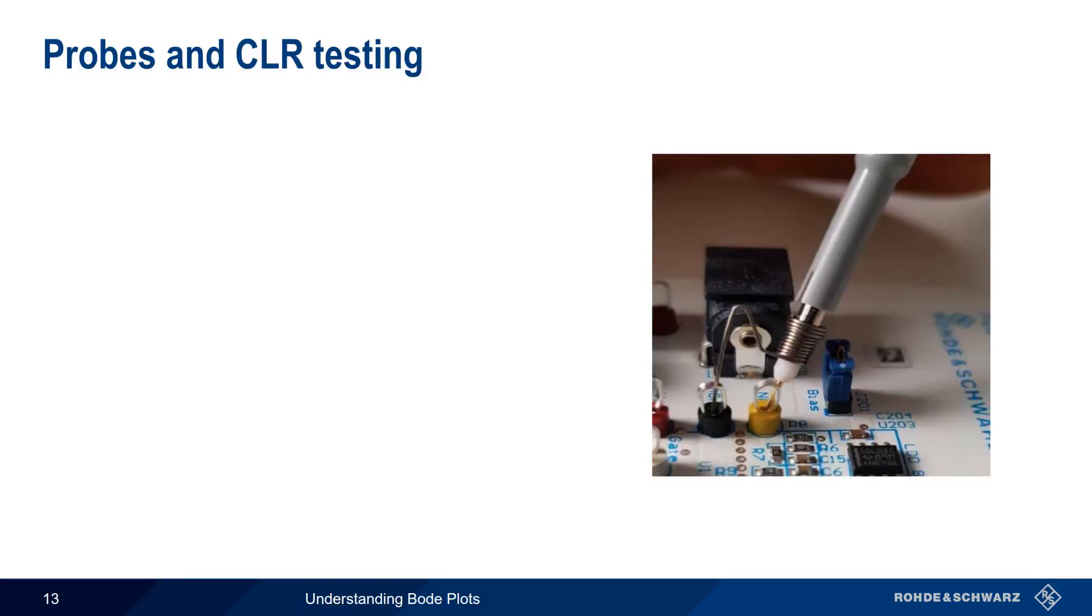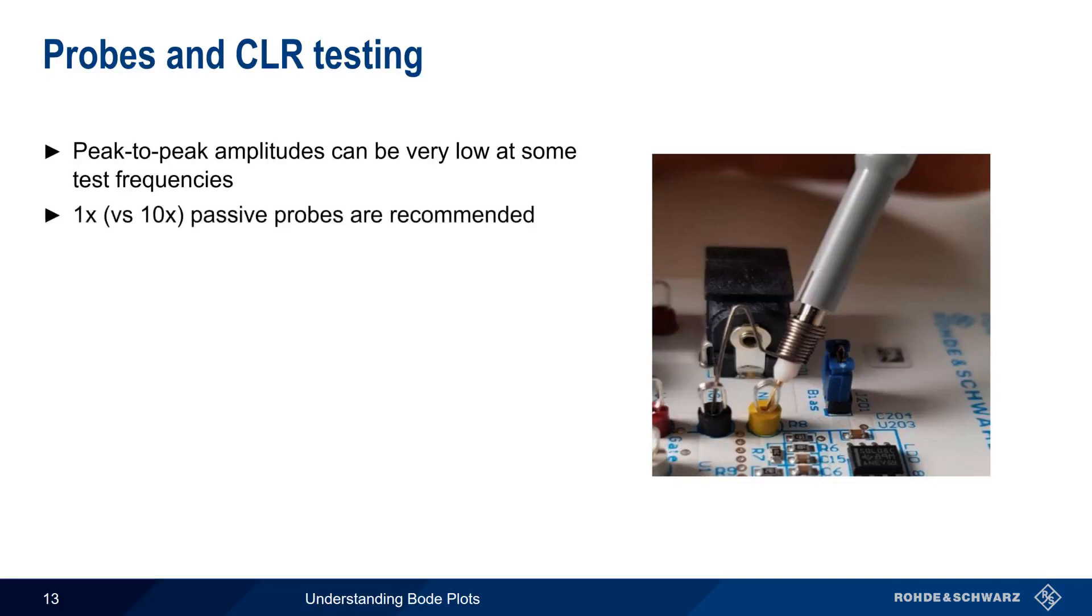When measuring closed loop response, it's important to use the right probes. The peak-to-peak amplitudes at our measuring points can be very low at some test frequencies. For this reason, 1x probes are recommended over the more common 10x probes. If we increase the signal-to-noise ratio, this also improves the dynamic range of our frequency response measurements.